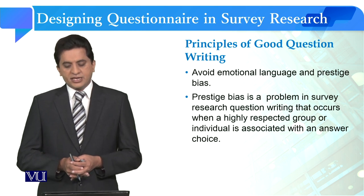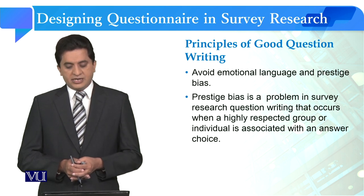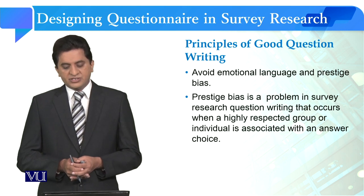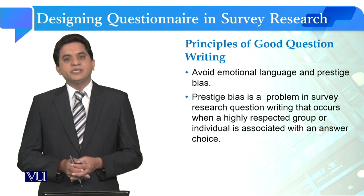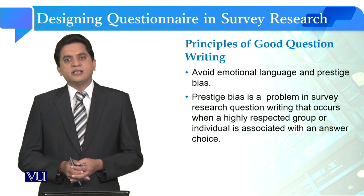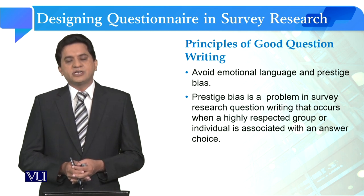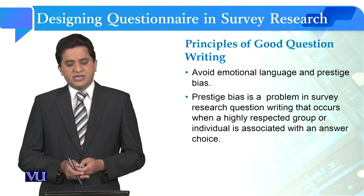The third principle is to avoid emotional language and prestige bias. Most of the time when we design a questionnaire on sensitive topics, we have to be very careful. Prestige bias is a problem in survey research question writing that occurs when a highly respected group or individual is associated with an answer choice. When asking questions to upper class individuals, bureaucrats or politicians, we can fall into this trap while designing questions, so we must avoid it.